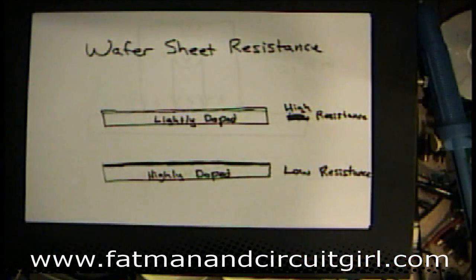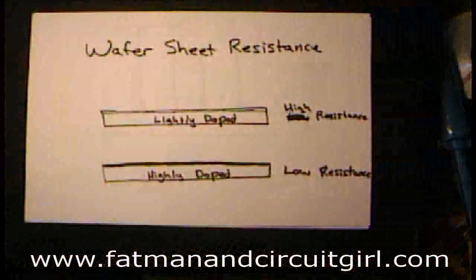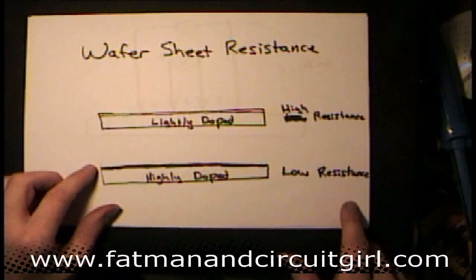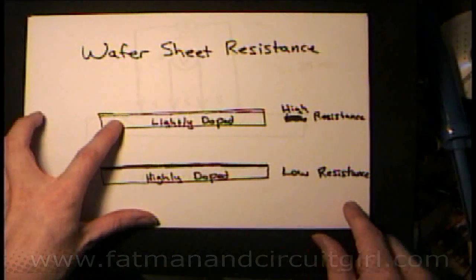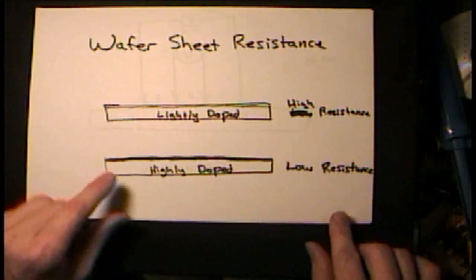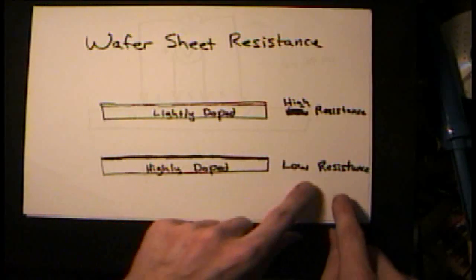When you receive these wafers, they're doped at different concentrations. Some of them are lightly doped and will have a high resistance when you check them with an ohmmeter. Some of them will be highly doped, so they'll have a low resistance.